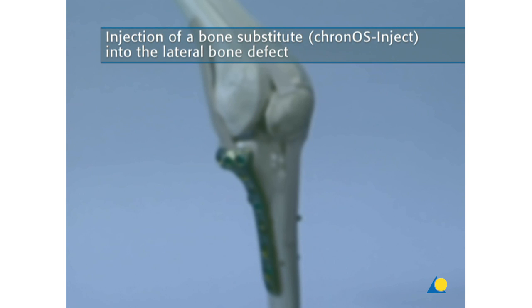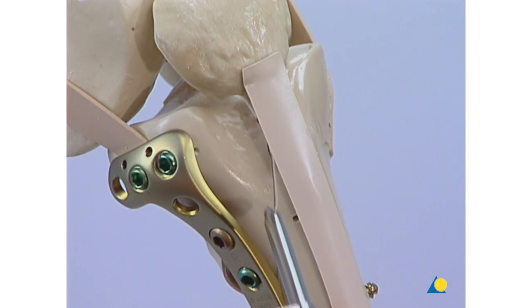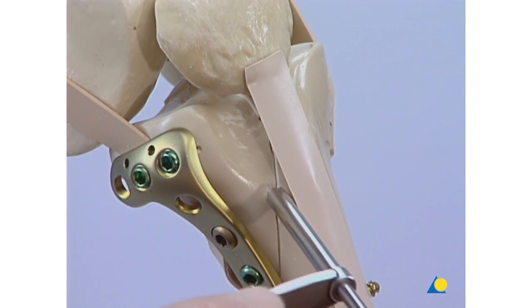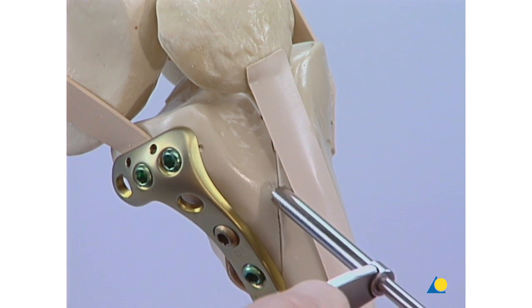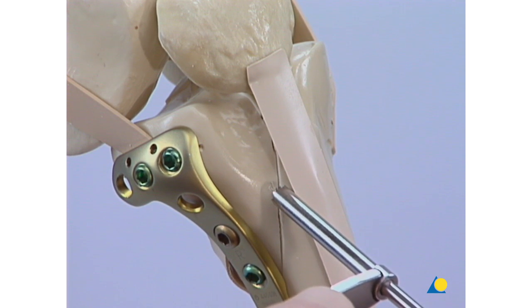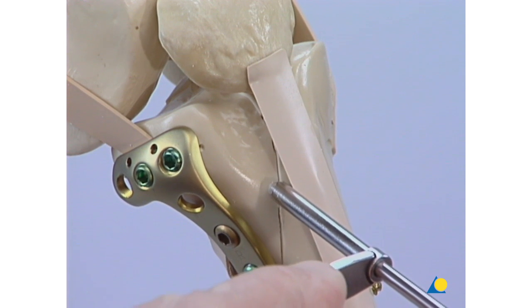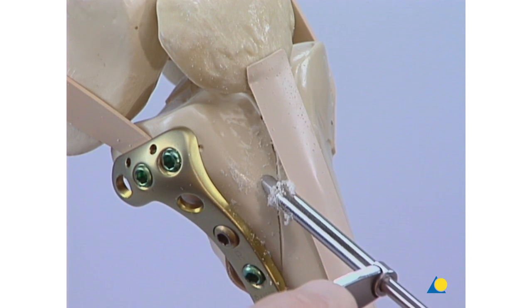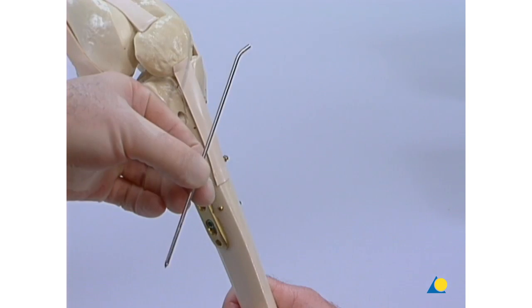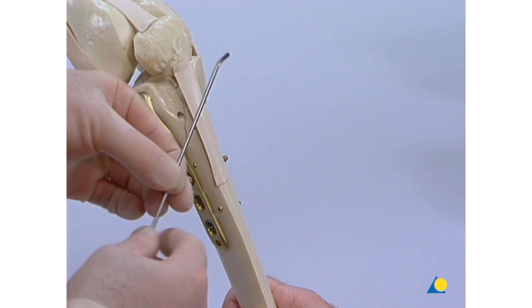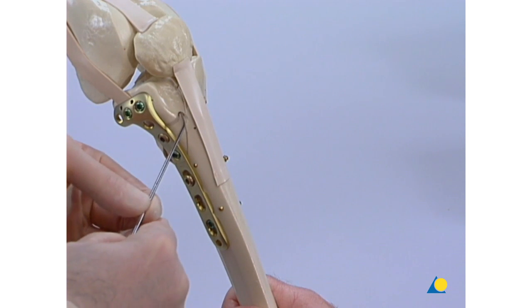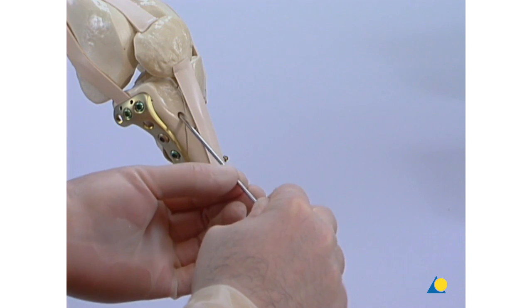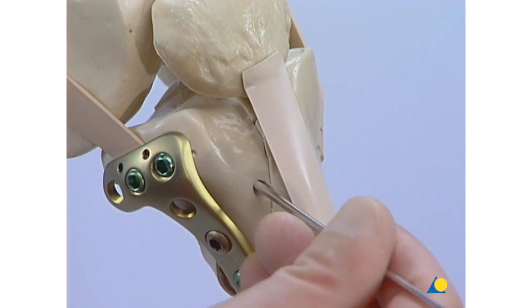Injection of a bone substitute, Kronos inject, into the lateral bone defect. A hole is drilled in the anterior cortex using a 4.5 millimeter drill. A probe is inserted into the bone defect and used to impact the bone debris to create a single space for the introduction of the Kronos inject.